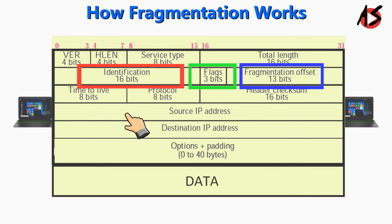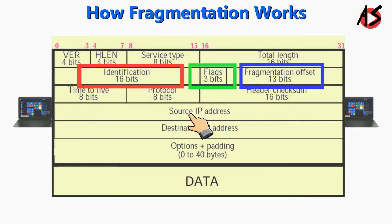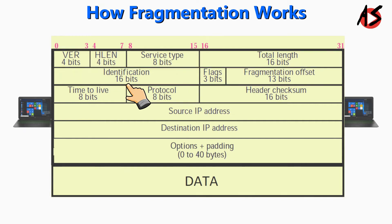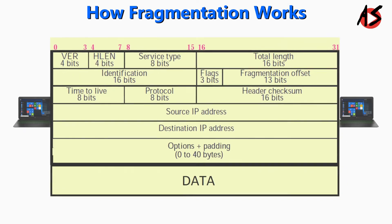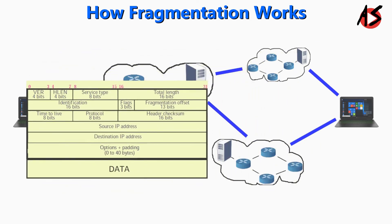The 16-bit identification field identifies a datagram originating from the source host. The combination of the identification and source IP address must uniquely define a datagram as it leaves the source host. When a datagram is fragmented, the value in the identification field is copied into all fragments — in other words, all fragments have the same identification number.